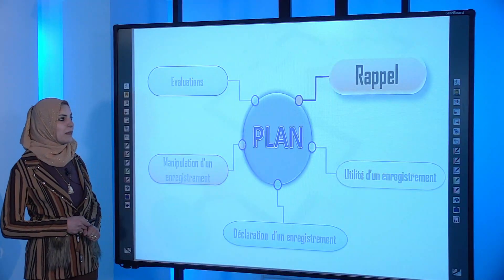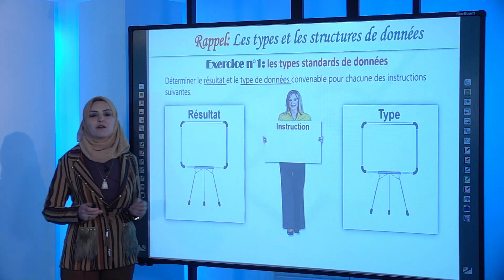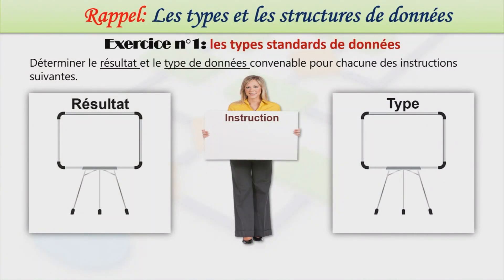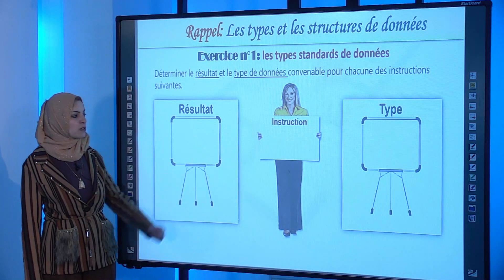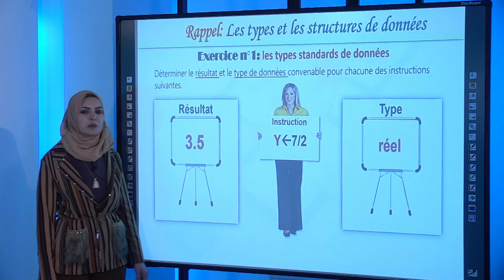Commençons par un rappel synthétisant les types et structures de données déjà vues. Dans l'exercice numéro 1, on se rappelle les types standards de données. L'instruction X reçoit carré de 2 donne la valeur 4, de type entier. L'instruction Y reçoit 7 sur 2 donne la valeur 3,5, de type réel.